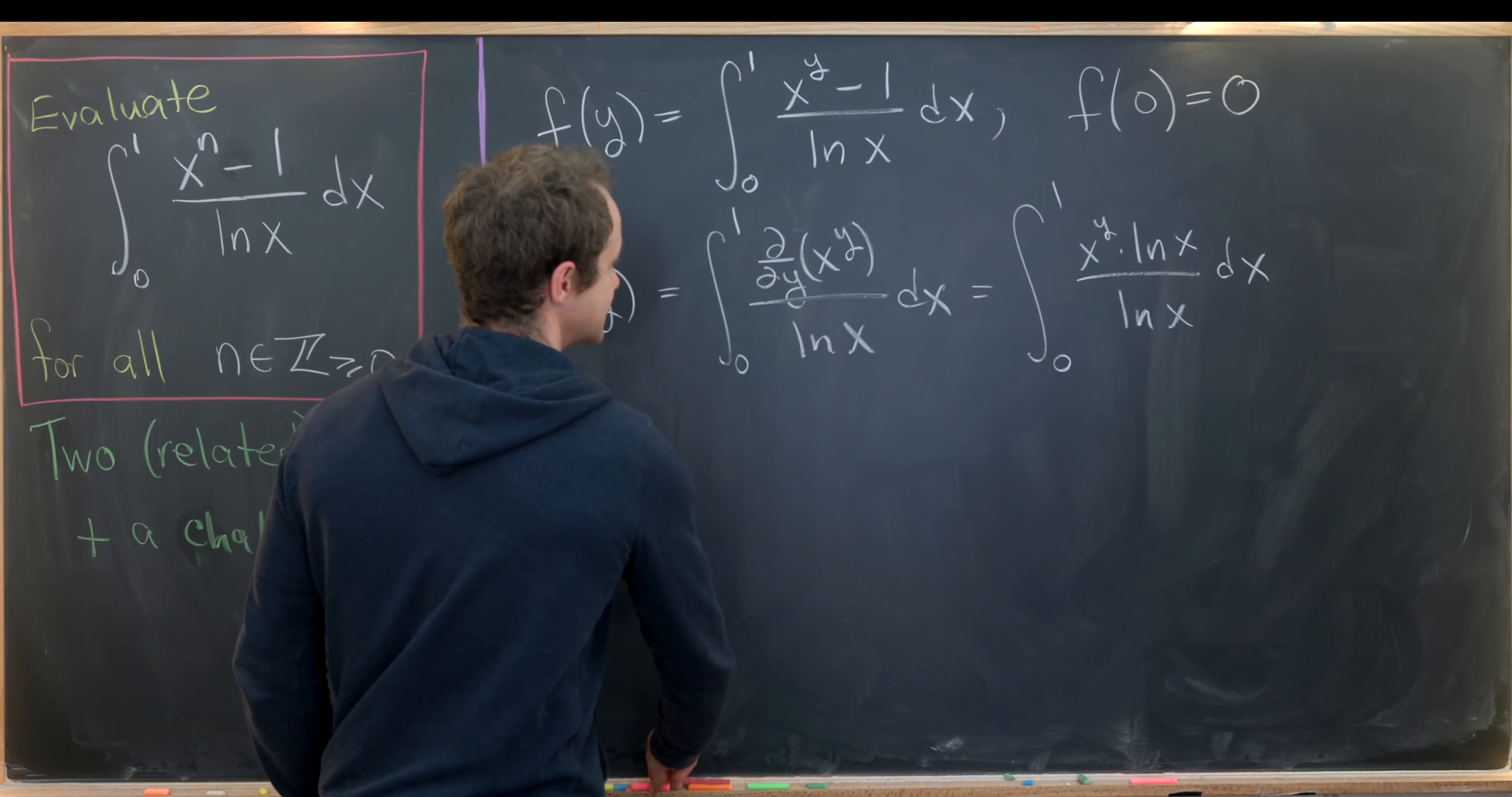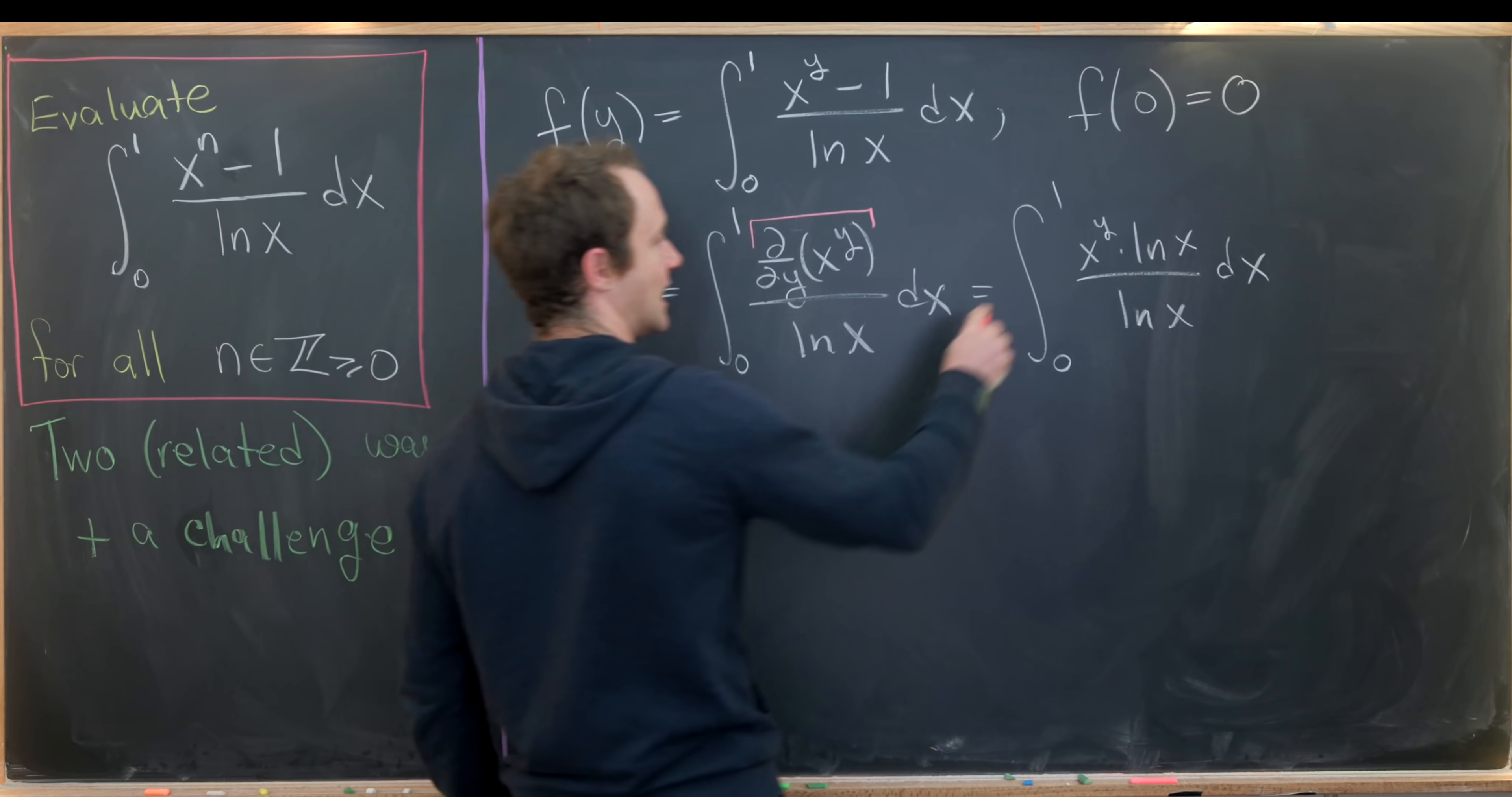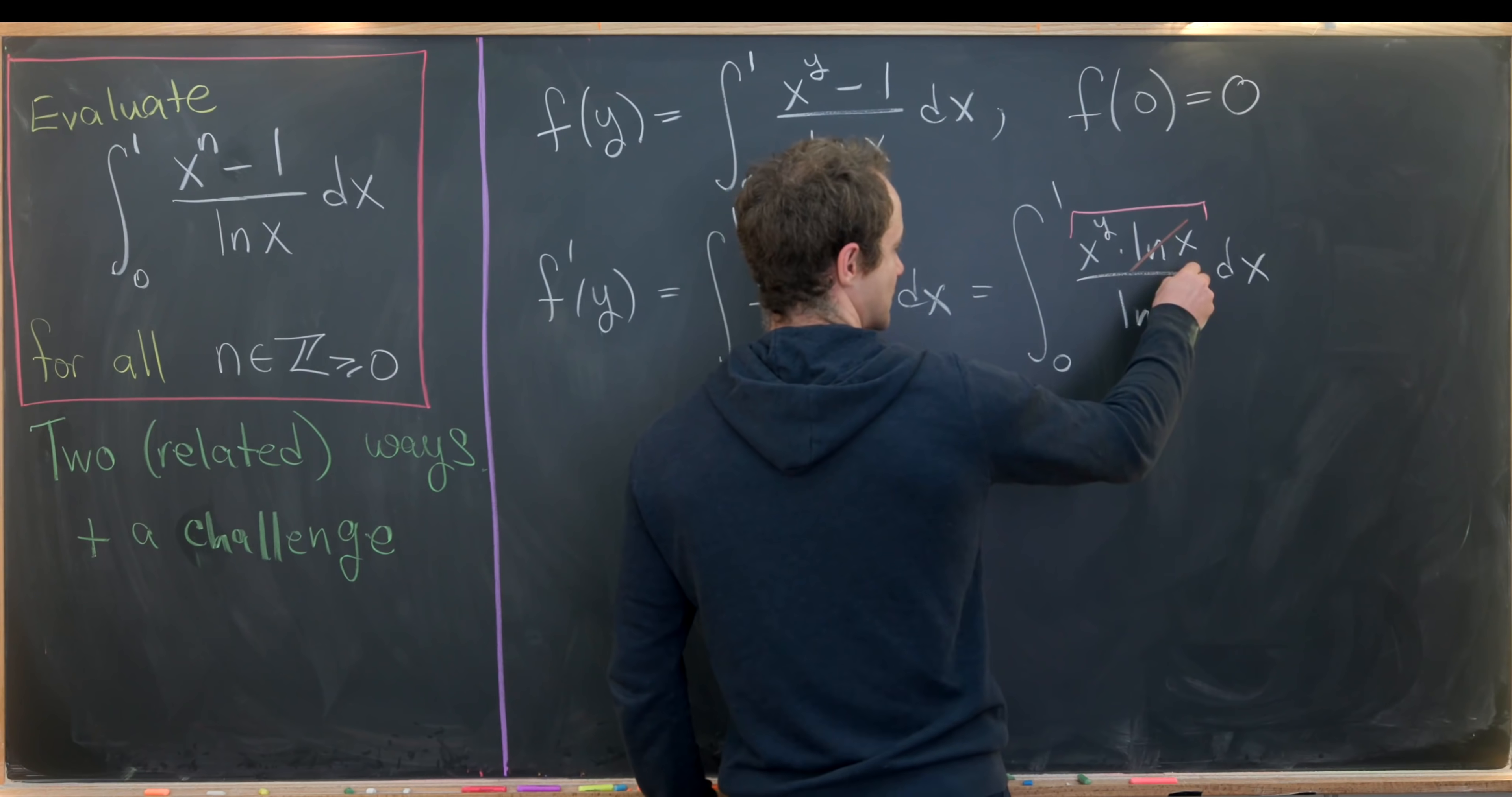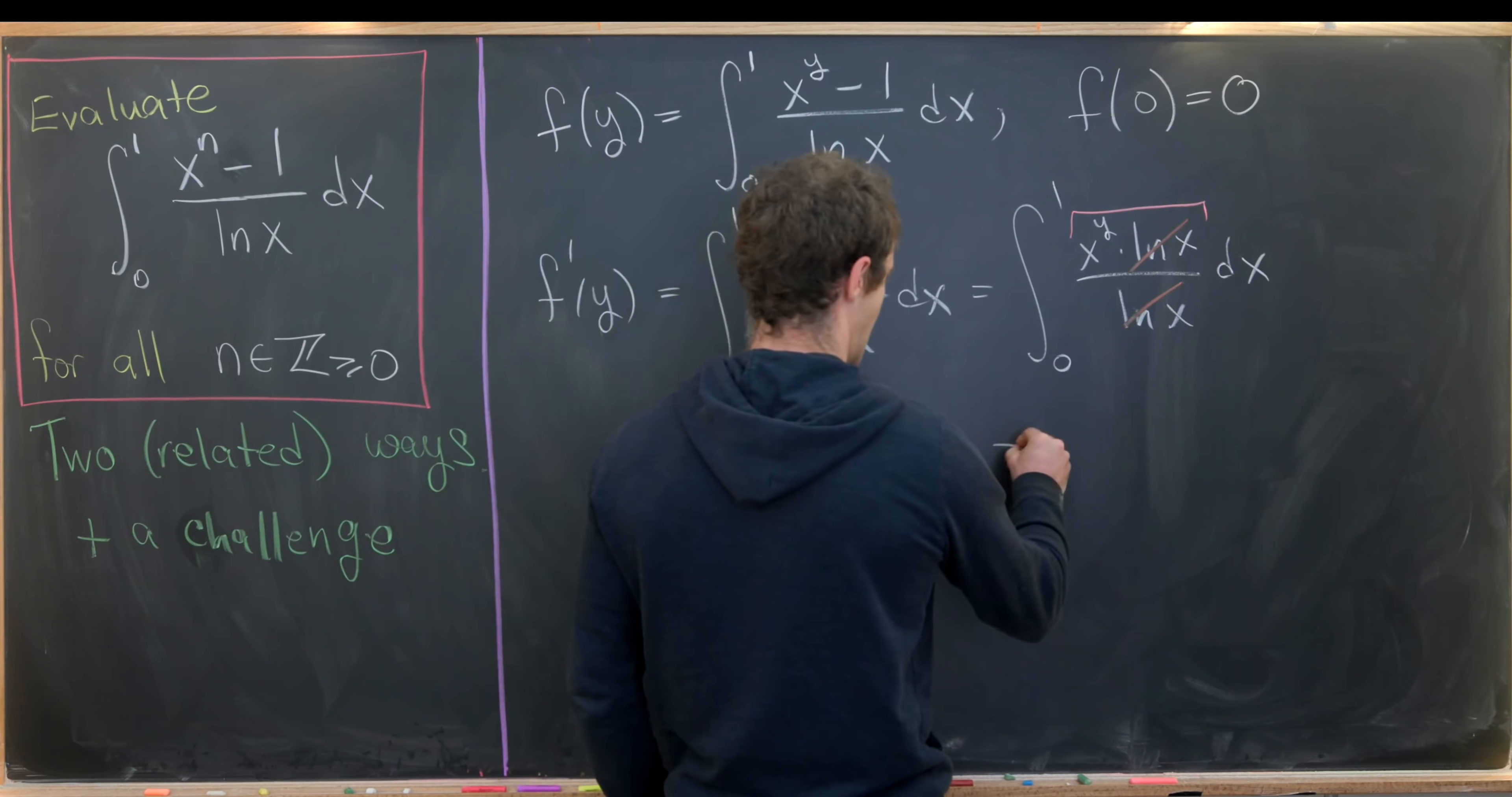And again, like I said, that's from the standard derivative rule that this derivative, which I've overlined in pink, turns into this. But now we can do some standard cancellation. This natural log of x will cancel this natural log of x. That leaves us with x to the y.